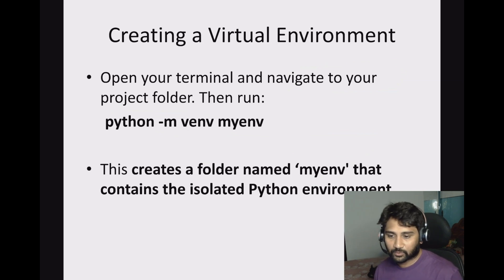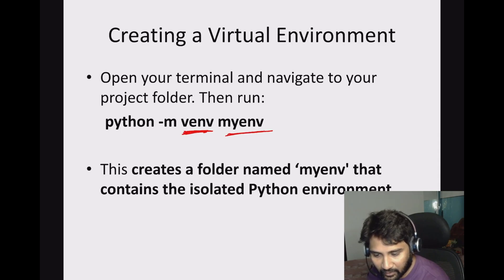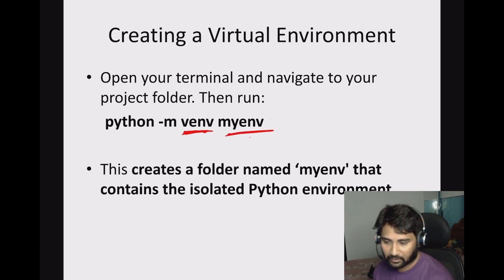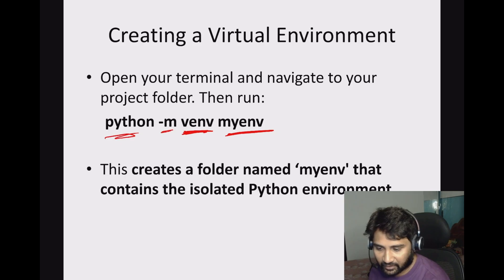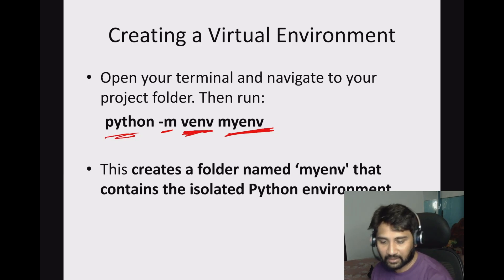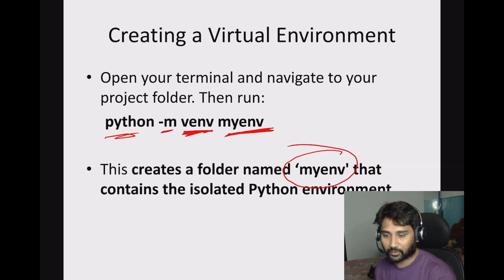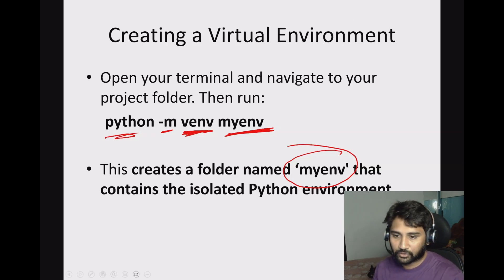How do we create this virtual environment? We use the venv module and give a name for that environment: `python -m venv my_env`. The `-m` means module, and `my_env` is the name of the virtual environment. When you run this, it creates a folder with that name, and inside that folder you will have Python — giving you a practical sense that it's a different environment altogether. Let me show you an example.